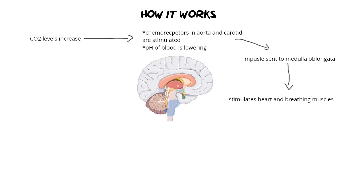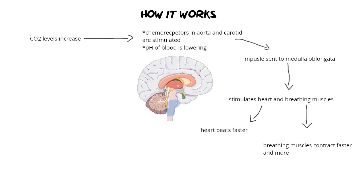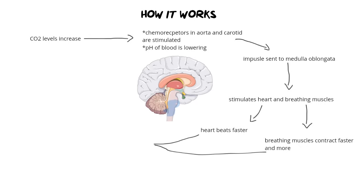These two things happen simultaneously. The first message that goes out to the heart is that it needs to beat faster — because the faster it beats, the more the blood circulates and the more carbon dioxide can be exhaled. The second thing, also simultaneous, is that the breathing muscles need to work harder and contract faster and deeper. By doing so you are pulling more air into the lungs and diffusion of gases can happen a lot quicker. Together, these two corrective measures combine their effects and produce more carbon dioxide to be exhaled — because that's the goal.